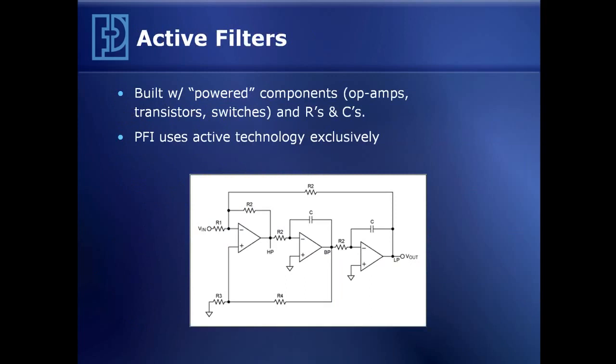An active filter, which is what we use exclusively here at Precision Filters, is built with powered components — components that require voltage supplies to power them. These components are op amps, transistors, and electromechanical or semiconductor switches. We use precision resistors and capacitors to form topologies that make the different filter characteristics we're interested in.